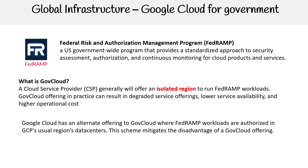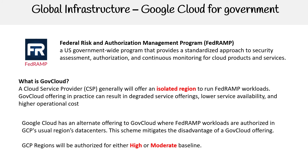GCP has an alternative to offering GovCloud where FedRAMP workloads are authorized in GCP's usual region data centers. This mitigates the disadvantages of a GovCloud offering. GCP regions will be authorized for either a high or moderate baseline. That was the thing — I was looking up GCP and couldn't find a GovCloud, so they just have a different way of going about it, and supposedly they say it is better.